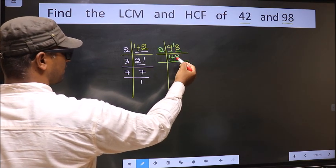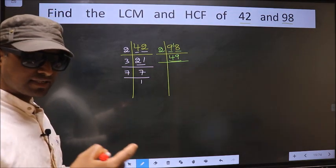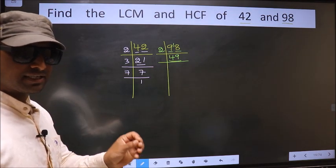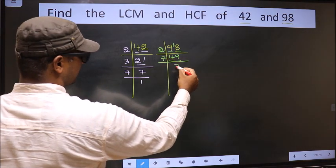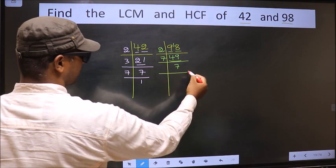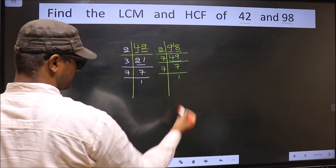Now here we have 49. Always remember, 7 squared is 49. 7 times 7 is 49. So I take 7 here, 7 times 7 is 49. Now we got 7, 7 is a prime number, so 7 times 1 is 7.